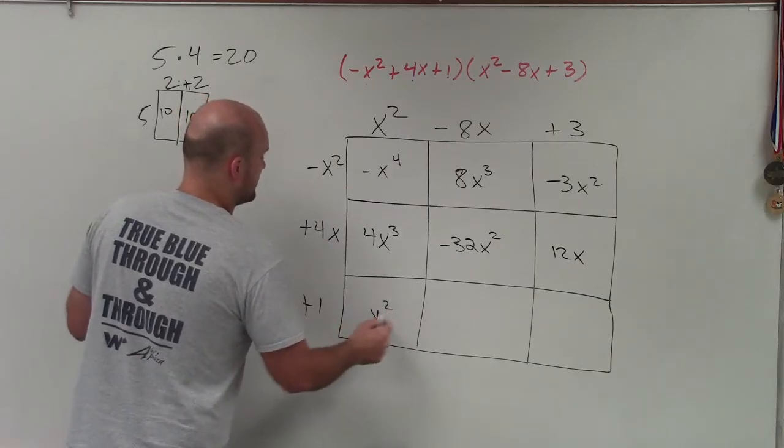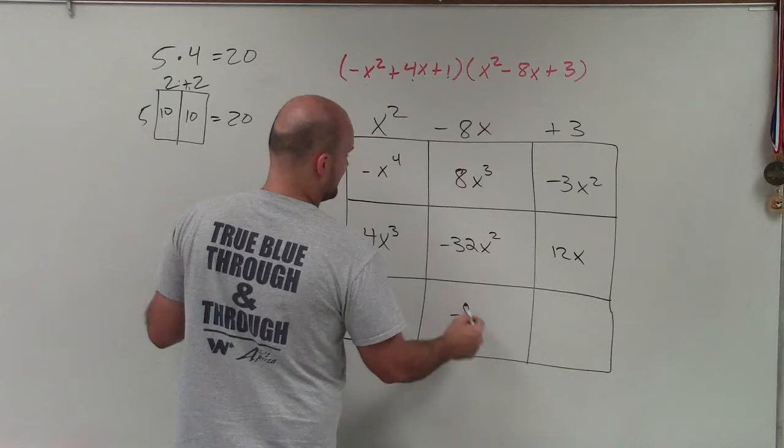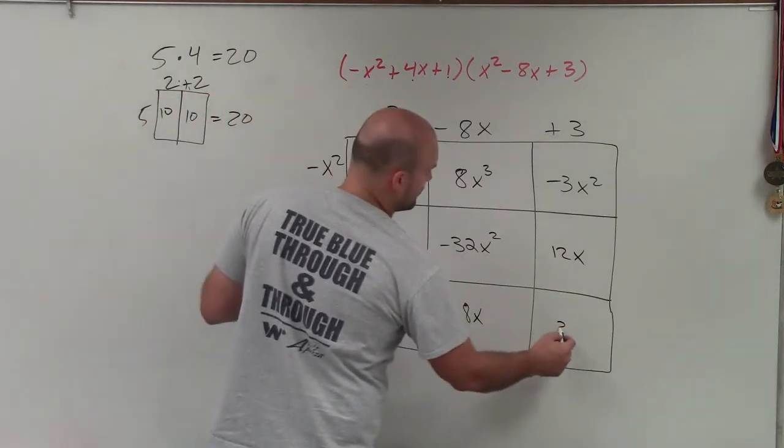x squared times 1 is x squared. Negative 8x times 1 is going to be a negative 8x. And 1 times 3 is equal to 3.